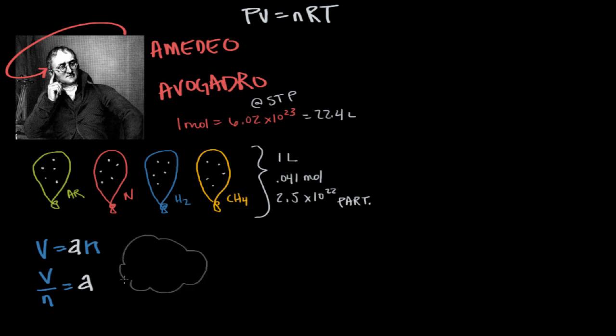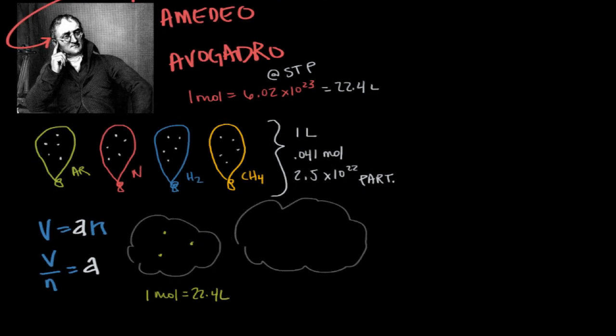For example, if we put in one mole of air particles, the balloon would be about 22.4 liters. As we blew more air into it, say another third of a mole, we would increase the volume to 29.88 liters.